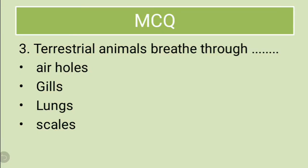Terrestrial animals breathe through — terrestrial animals means the animals that live on land. The animals that live on land, they breathe through what? The options are air holes, gills, lungs, or scales. The correct answer is lungs. Terrestrial animals breathe through their lungs.